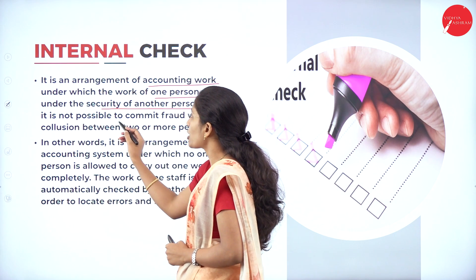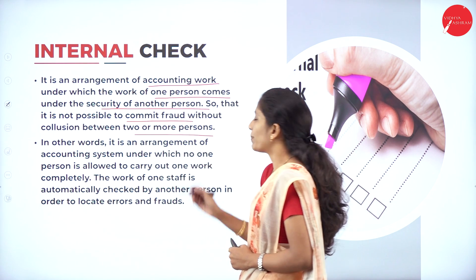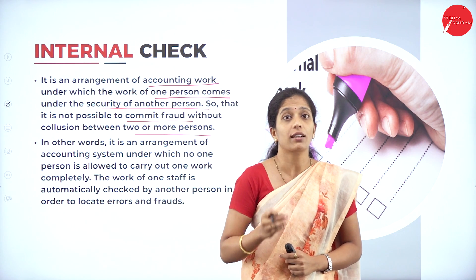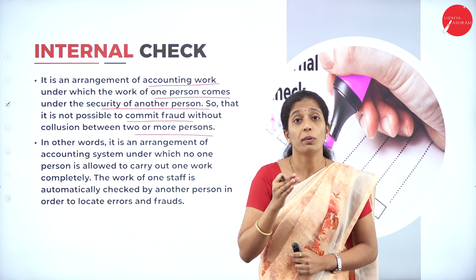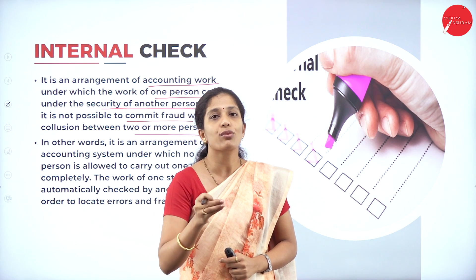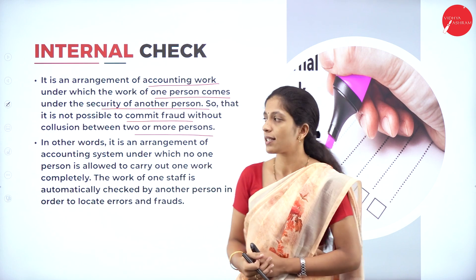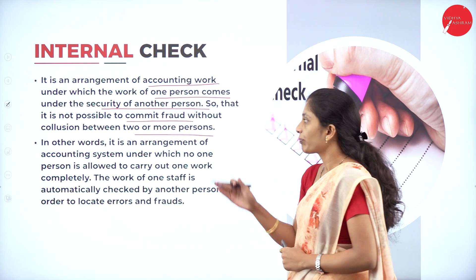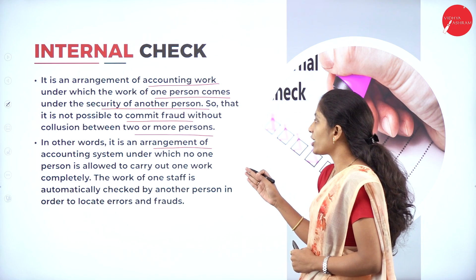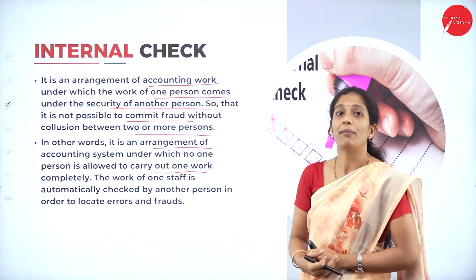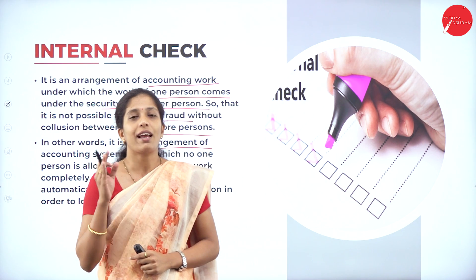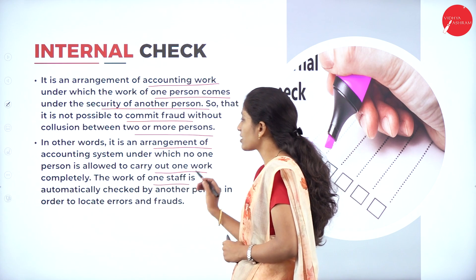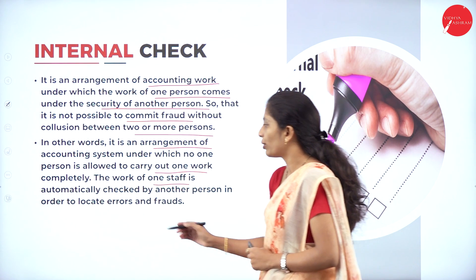Internal check is an arrangement of accounting work under which the work of one person comes under the scrutiny of another person — one person will do the work and that work will be under the control of some other person. This is done so that it is not possible to commit fraud without collusion between two or more persons. In other words, it is an arrangement under which no one person is allowed to carry out one work completely. The work of one staff is automatically checked by another person in order to locate errors and frauds.